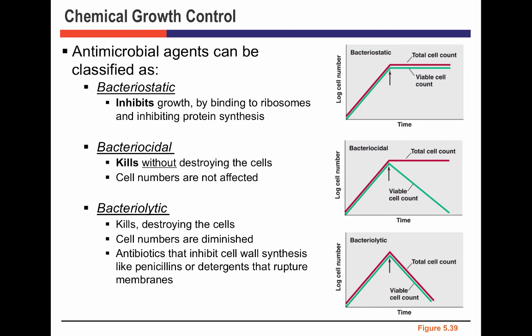A student clarifies: bacteriocidal kills the cell but does not destroy the membrane and cell wall, so you won't have an empty sac counted on a hemocytometer. Bacteriolytic compounds actually burst the cell open — when you add them, both viability and total cell count go down. So an antimicrobial agent can be bacteriostatic (prevents growth but doesn't kill), bacteriocidal (kills without destroying the cell), or bacteriolytic (bursts the cell open).